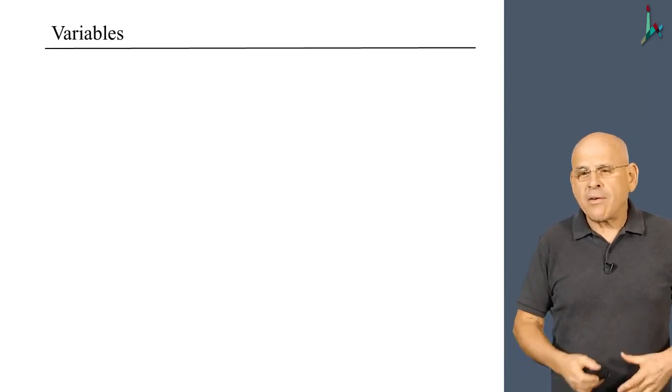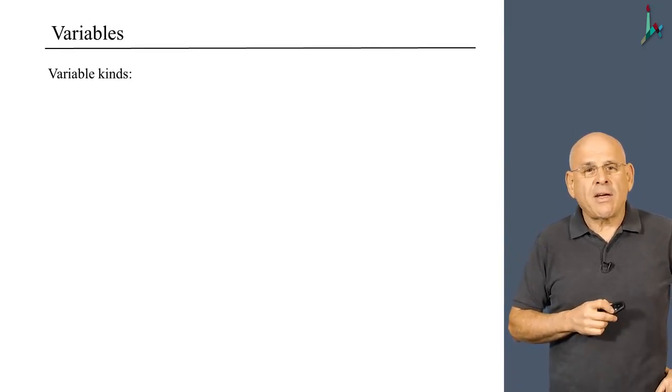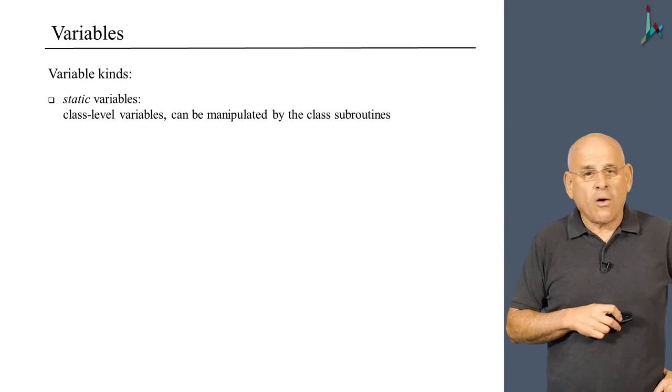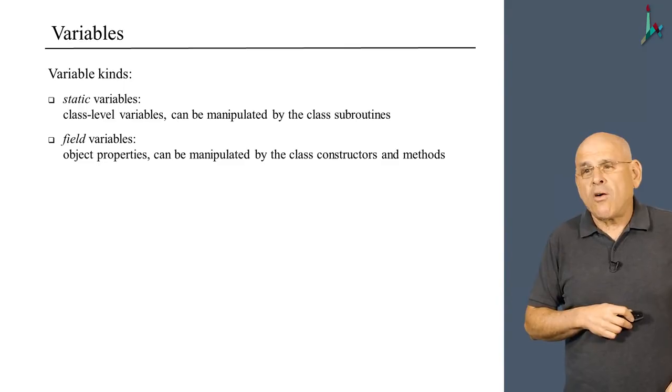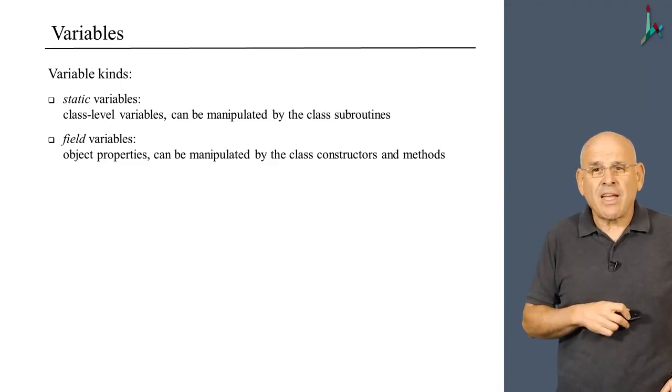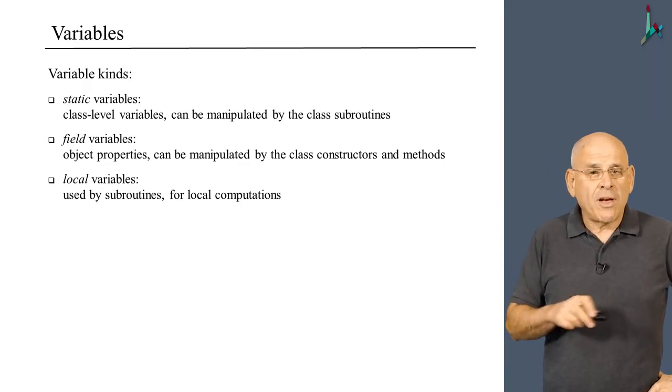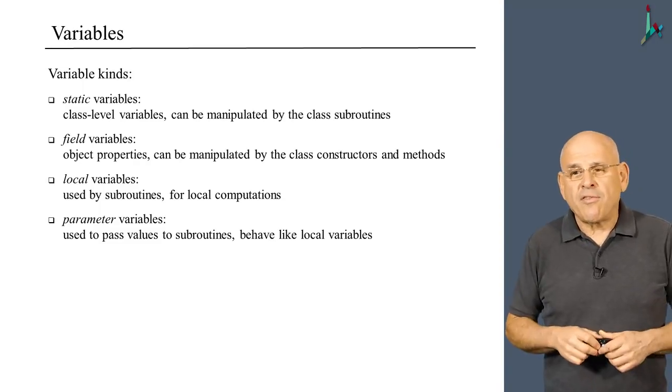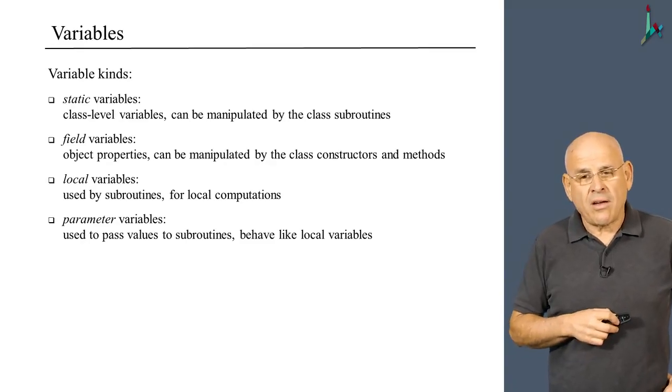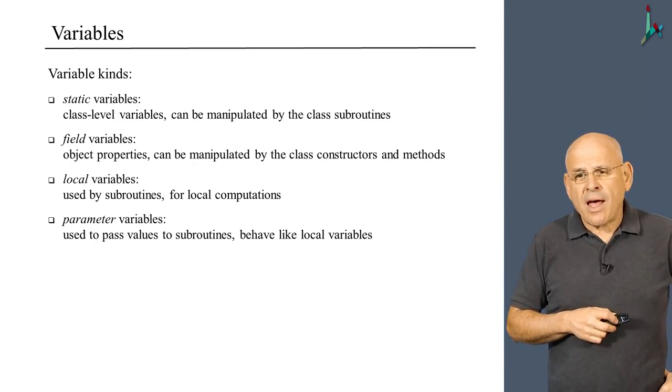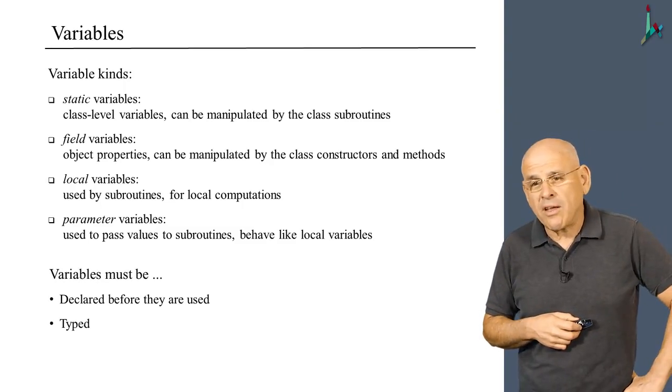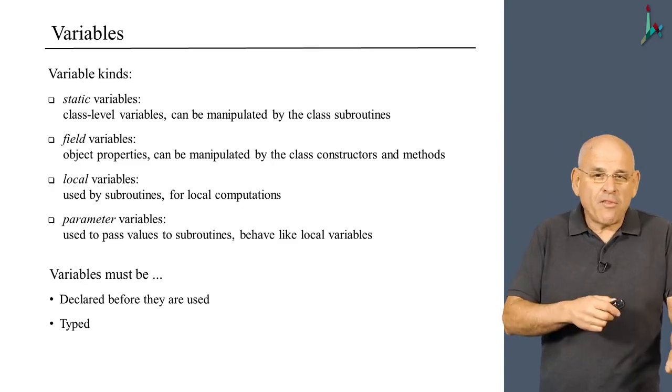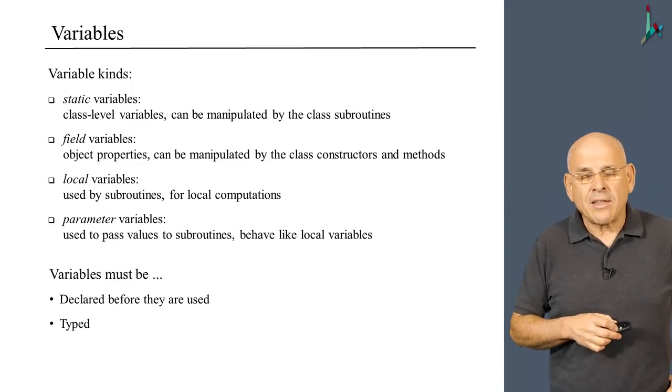Programs are rife with variables, of which Jack offers four kinds. We have static variables, which are class level variables seen by all subroutines in the class. We have field variables also seen by all methods and constructors but not by functions, because a function doesn't understand what is a field. We have local variables used locally by subroutines, and parameter variables which are essentially the same as local variables except they can be initialized from the outside. All these variables must be typed and declared before they are used. The language is weakly typed, so we can almost always assign a variable to any other variable irrespective of the types.